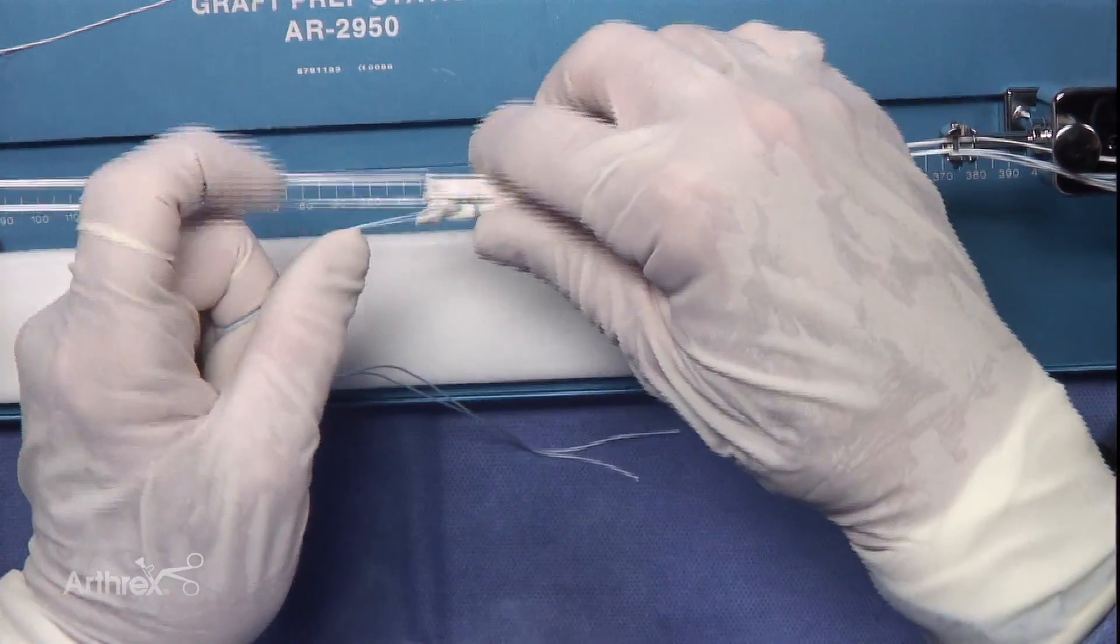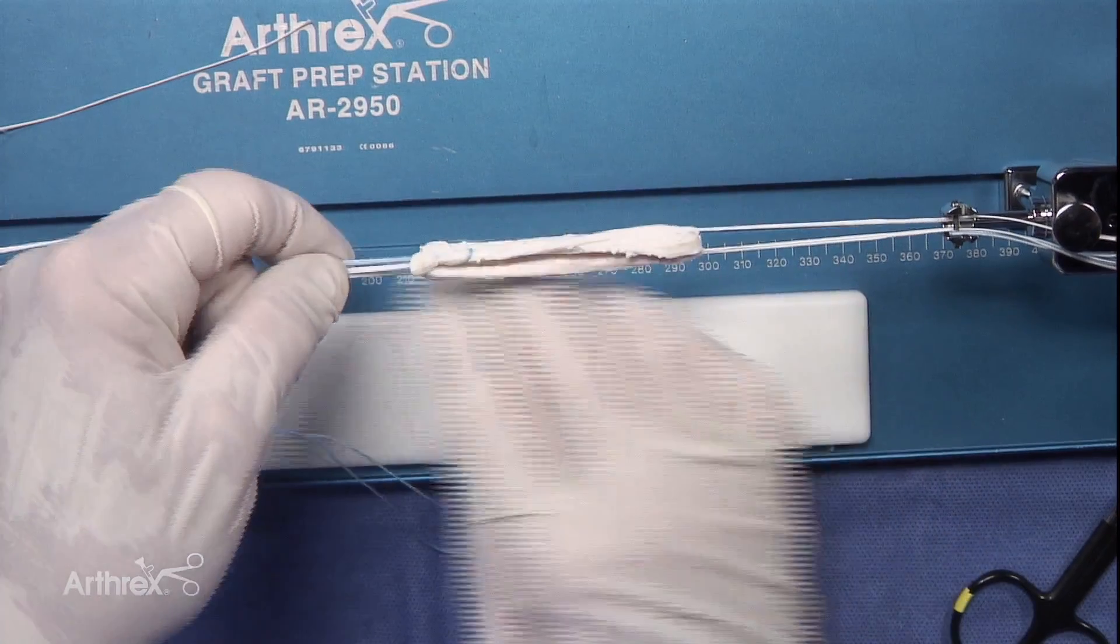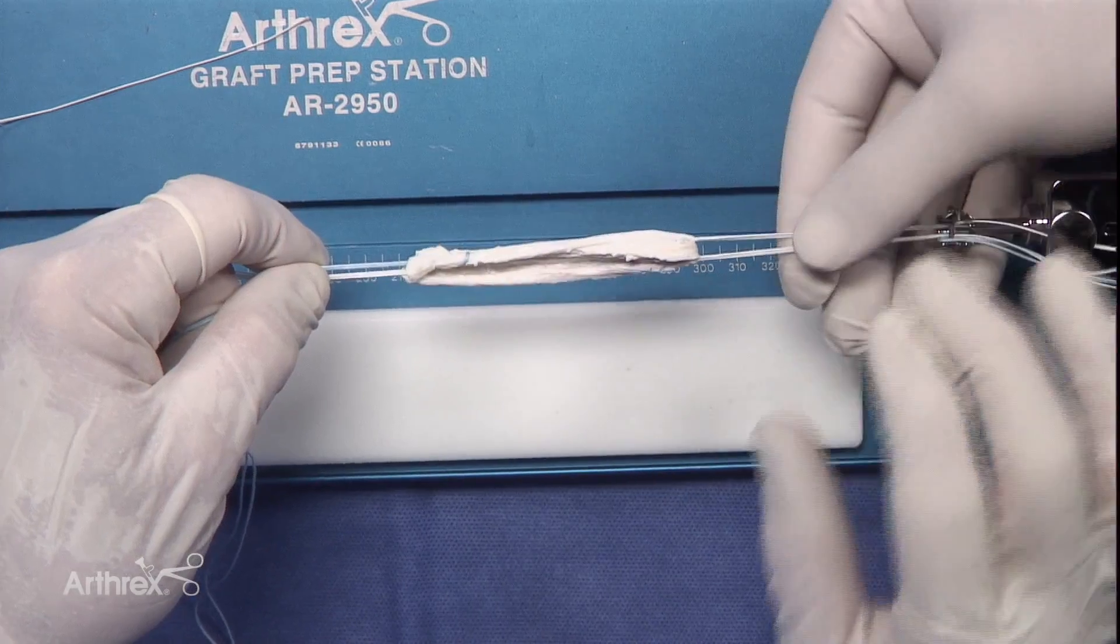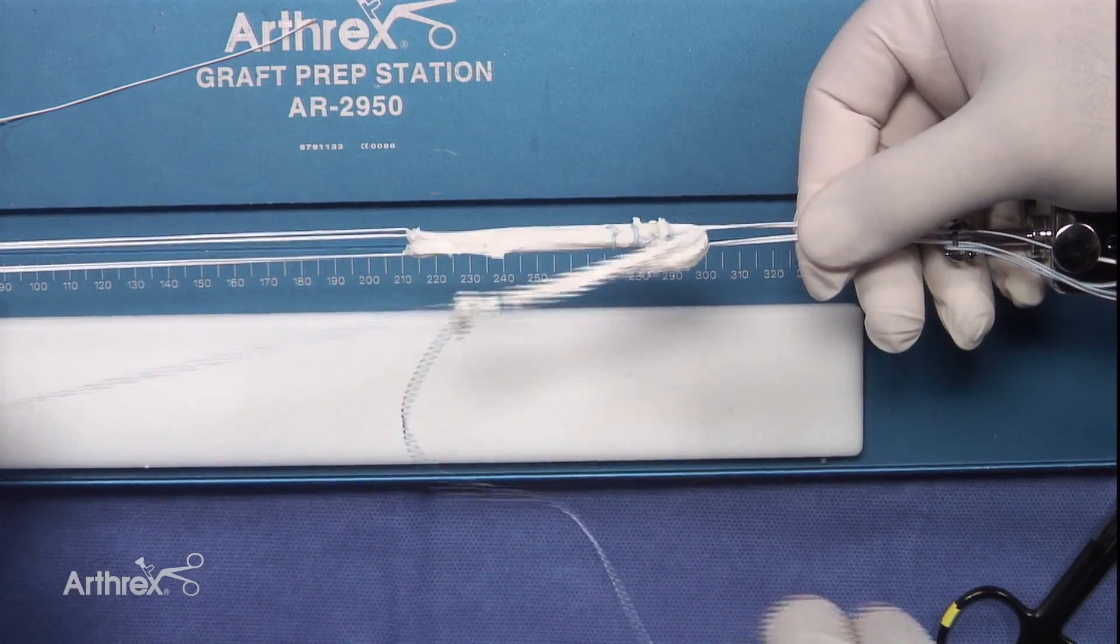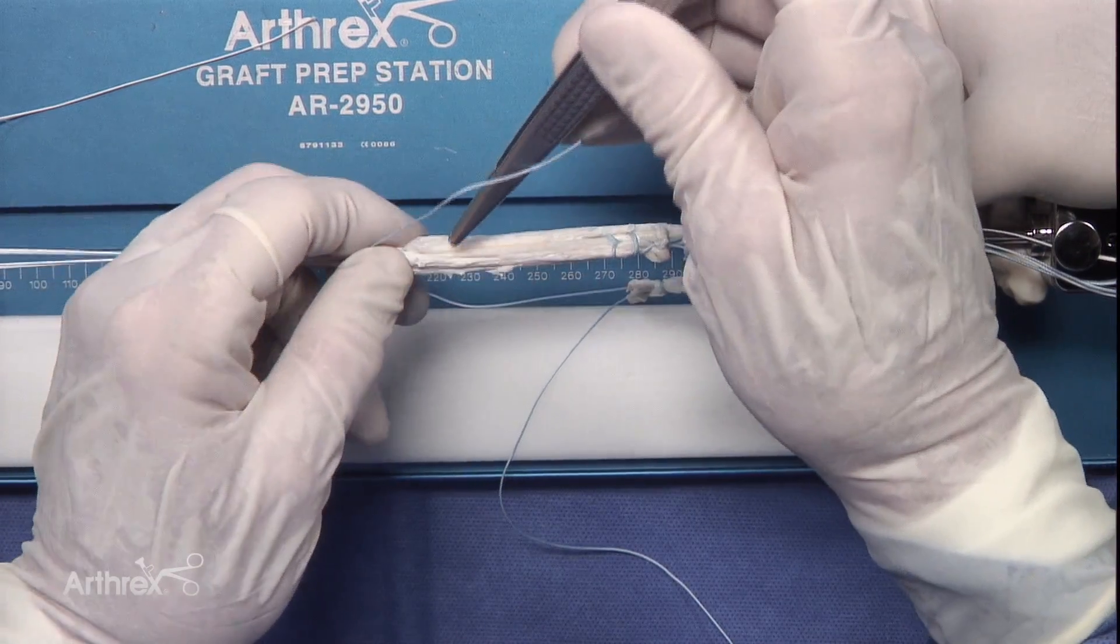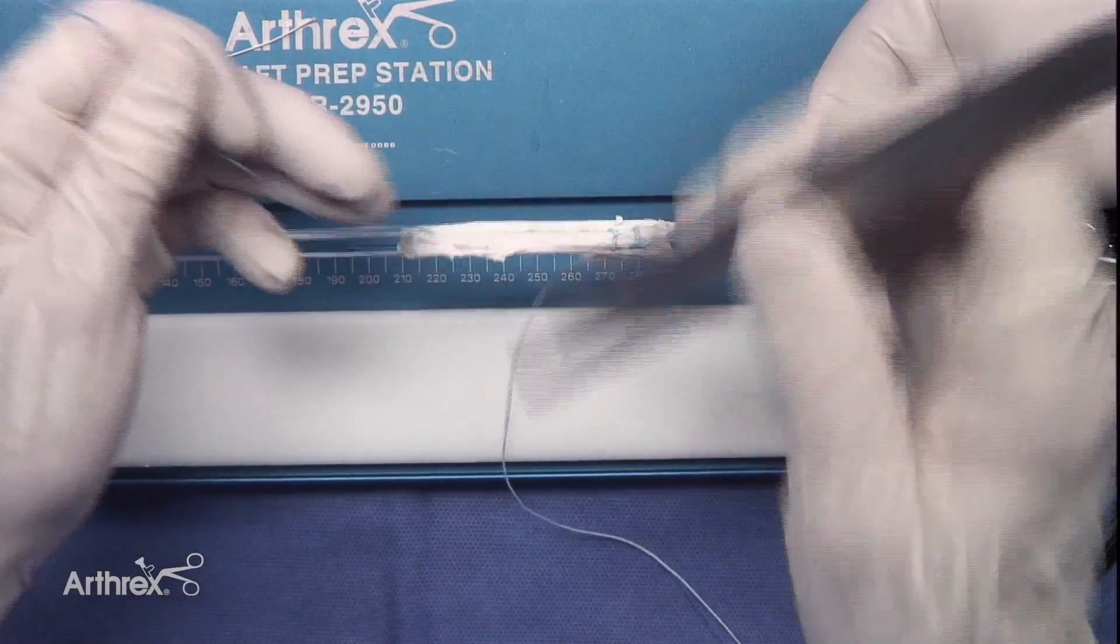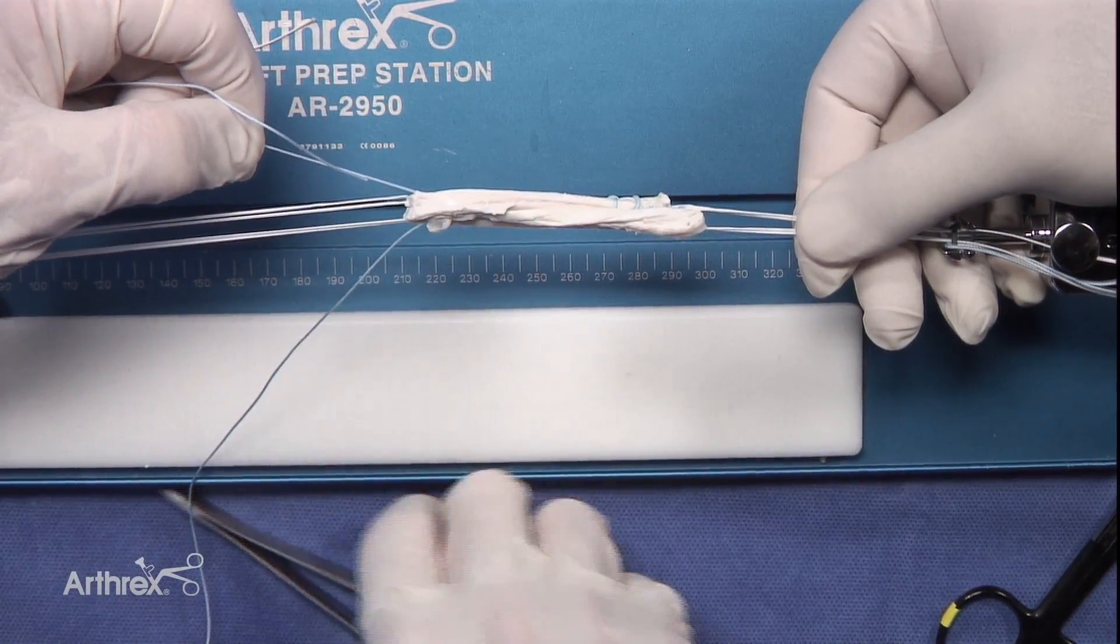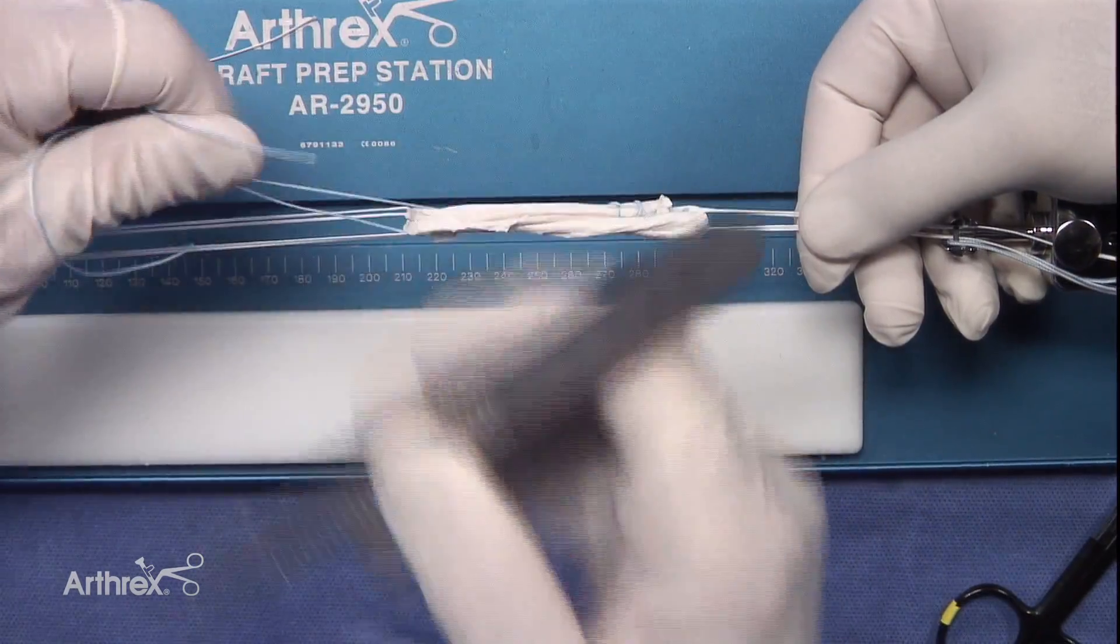Here's the final adjustment in the length. The construct is coming together very nicely. Put a little tension in that, and then we'd like to tuck this final end into the center. Once in the center, we're going to tie it there.